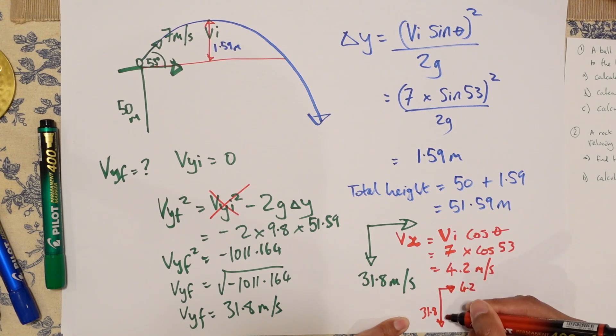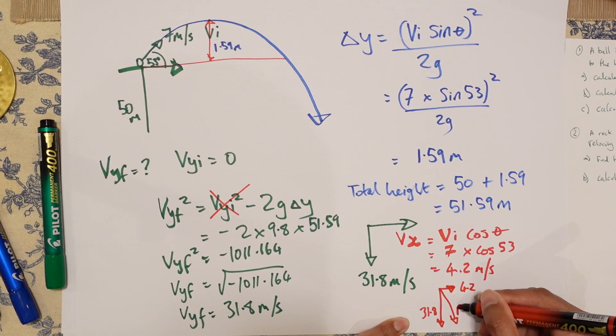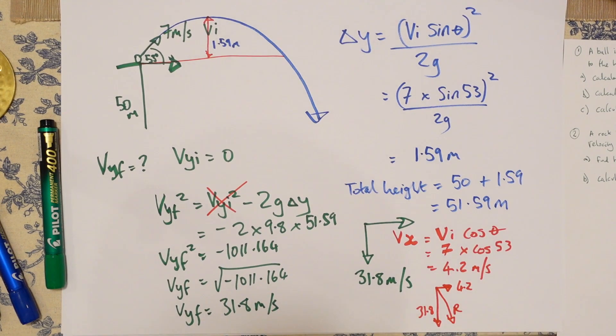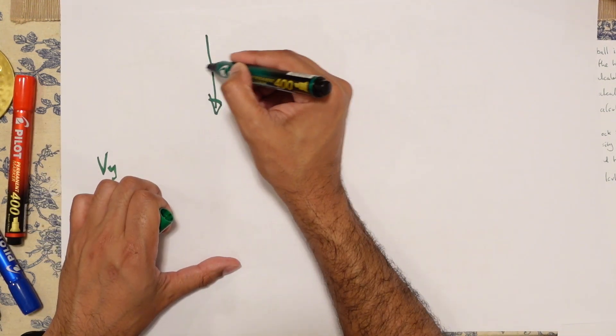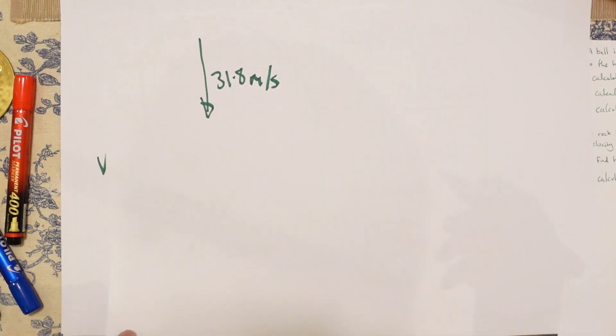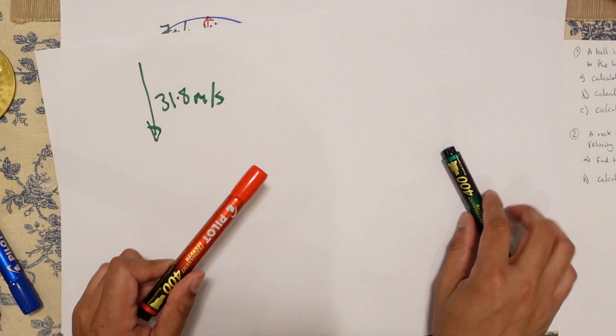So we've got to work that out using Pythagoras. So let's get a new piece of paper. So I've got 31.8 meters per second. This is my VYF. I have 4.2 meters per second.